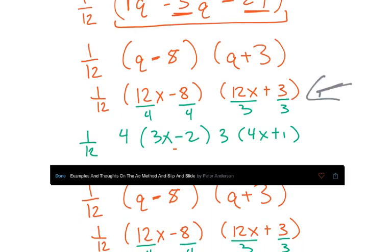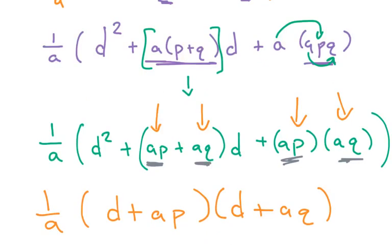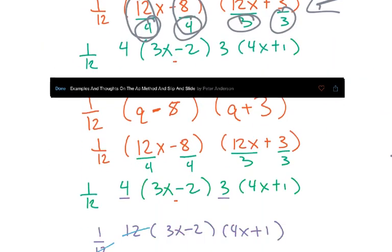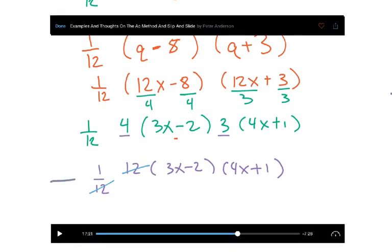Now remember, 4 and 3 is 12. So what this is saying is that there's always going to be some factor of 12 that will come out to the outside. And here we have, so that we can get to this step here, that we cancel things out.